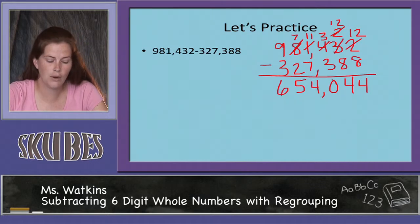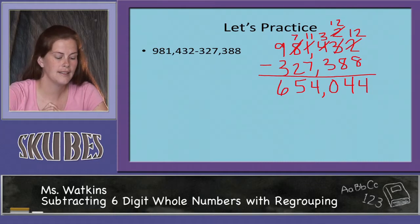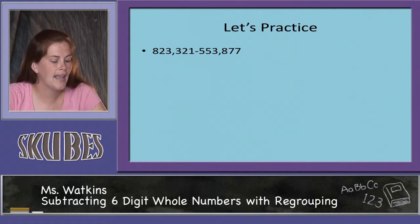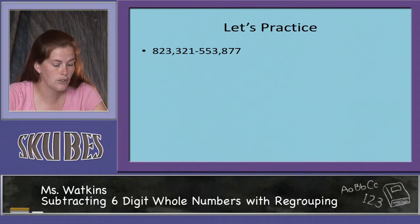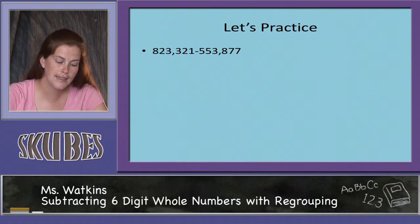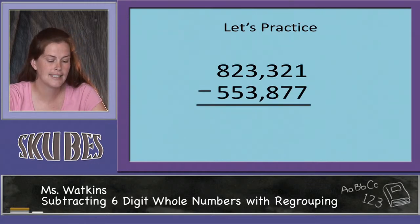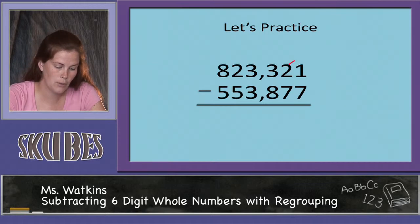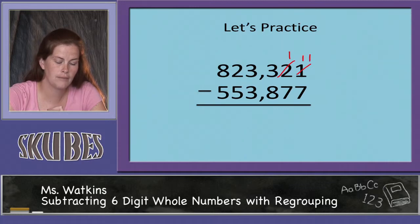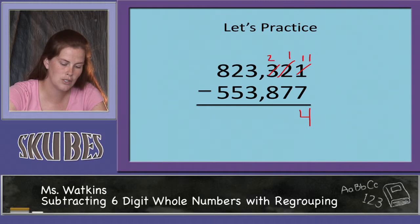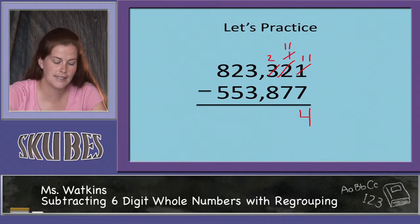Let's look at another one. We have 823,321 minus 553,877. I already have them stacked here. Starting with our ones column, we know we need to regroup, so we'll come over to our tens place: this 2 becomes a 1 and this 1 becomes an 11. 11 minus 7 equals 4. We need to regroup again: this 3 becomes a 2 and this 1 becomes an 11. 11 minus 7 equals 4.